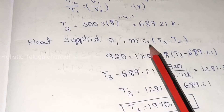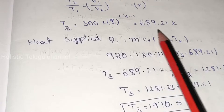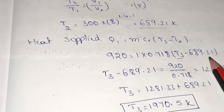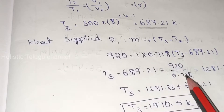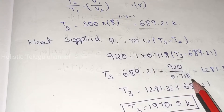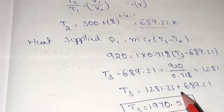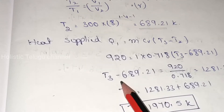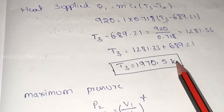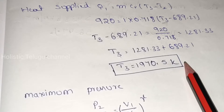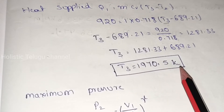The heat supplied Q1 = Cv × (T3 − T2). So 920 = 1 × 0.718 × (T3 − 689.21). Therefore T3 − 689.21 = 920 / 0.718 = 1281.33. So T3 = 1281.33 + 689.21 = 1970.5 Kelvin.